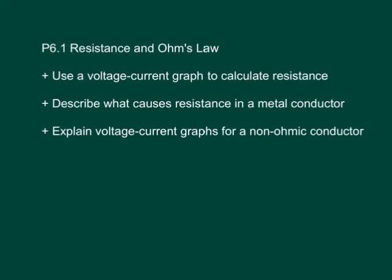So that brings us to the end of this lesson on resistance and Ohm's law. So it's just worth recapping what we were trying to get out of it and that fundamentally was basically to calculate resistance from voltage current graph which we looked at an example, we used the particle collision model to explain resistance in a metal conductor and then we kind of applied that model to a voltage current graph for a non-ohmic conductor to explain the shape of its curve.